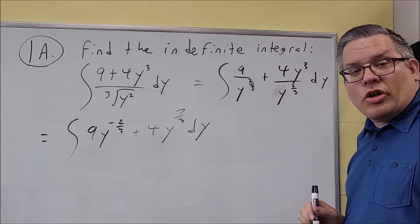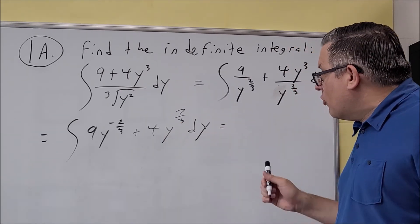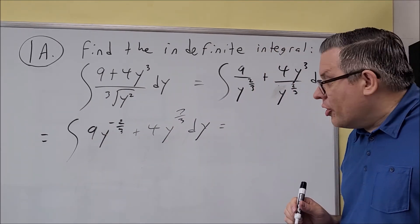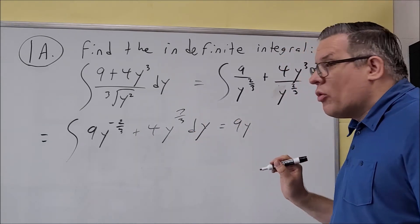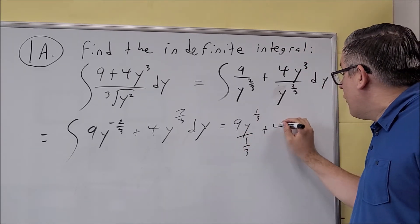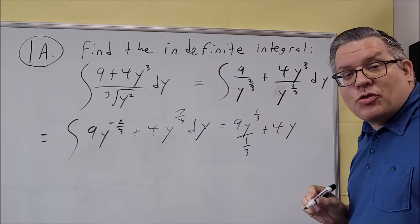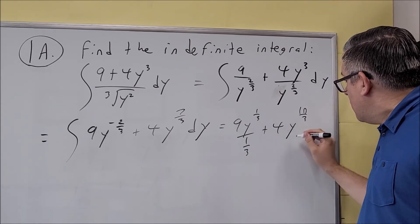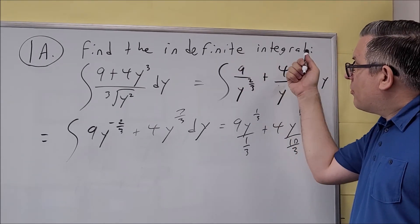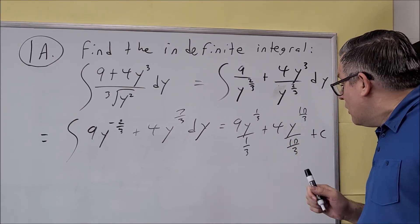Now for each of these, we're going to use the inverse power rule: raise the power by 1 and divide by the new power. Once you apply the antiderivative formula, you no longer write the integral symbol. So for the first term, we have 9 — we raise the power by 1, adding 3/3, giving 1/3, then divide by 1/3. For the second term, we have 4, y to the 7/3 — raise the power by 1, adding 3/3, giving 10/3, then divide by 10/3. Don't forget to add plus C. Any problem with an indefinite integral requires a plus C on your answer.